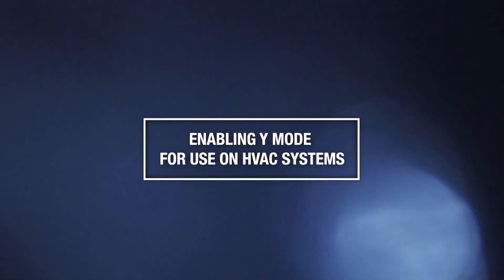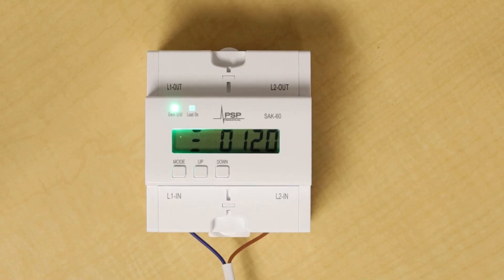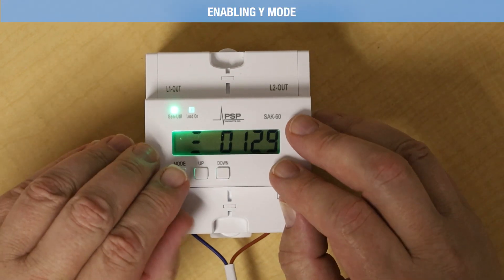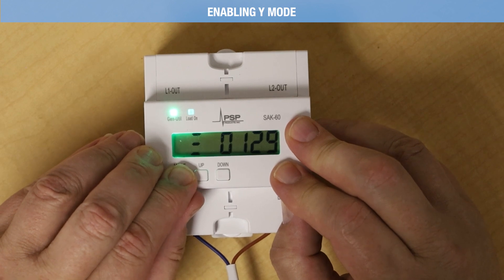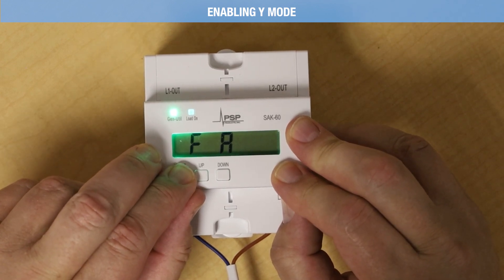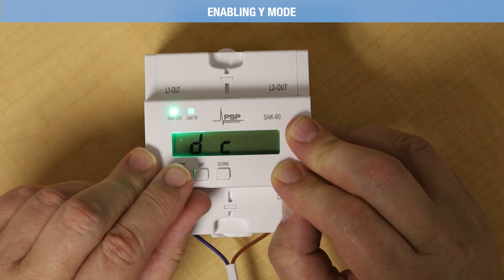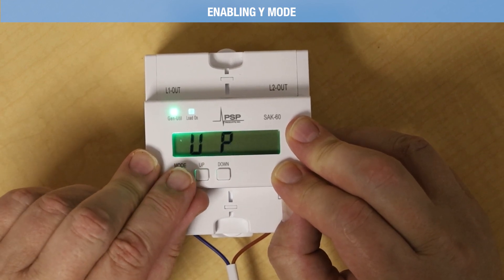When using the SAK60 on an HVAC circuit, you should enable Y mode. Y mode is only used on HVAC systems and will prevent extended reverse cycling of scroll compressors upon return to utility power. To enable Y mode, first hold the mode button for about 3 seconds until 2 digits display. Press the mode button to scroll to UA.